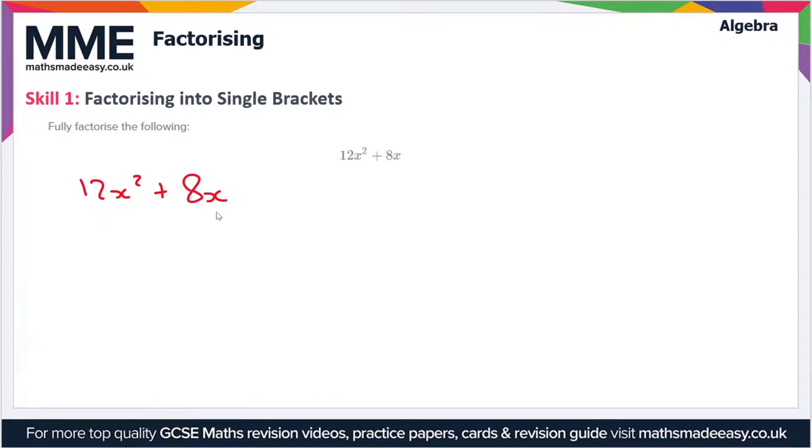Now 12 and 8 both have a factor of 4. So 12 over 4 equals 3 and 8 over 4 is 2. If we take a factor of 4 out of this expression we're going to be left with 3x squared plus 2x.